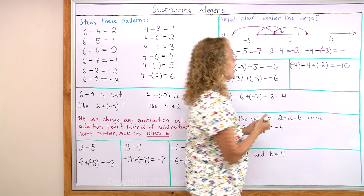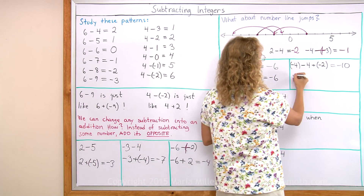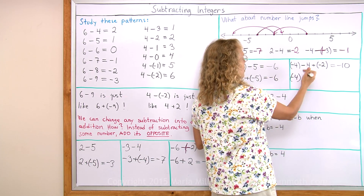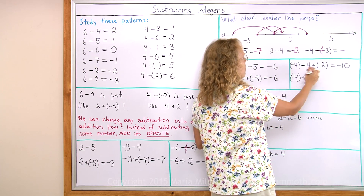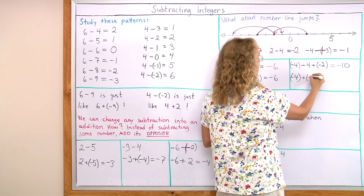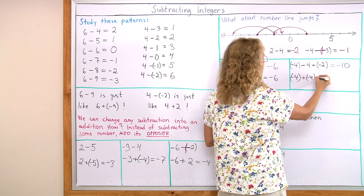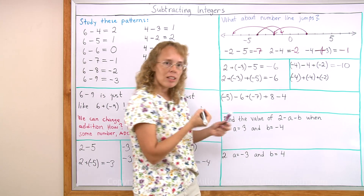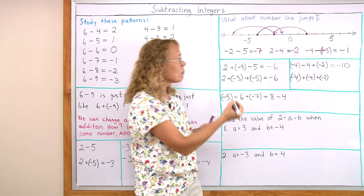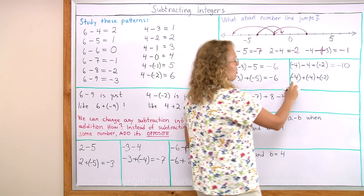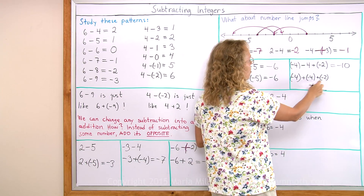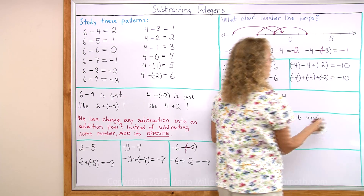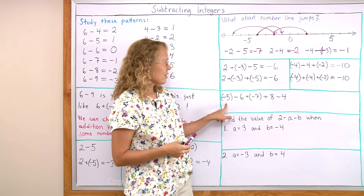Or, the other way is to change this subtraction into an addition: instead of subtract 4, you add negative 4. And now you can see there's an addition of three negative numbers. So we just add 4 plus 4 plus 2 is 10, and notice that it has to be a negative sum.